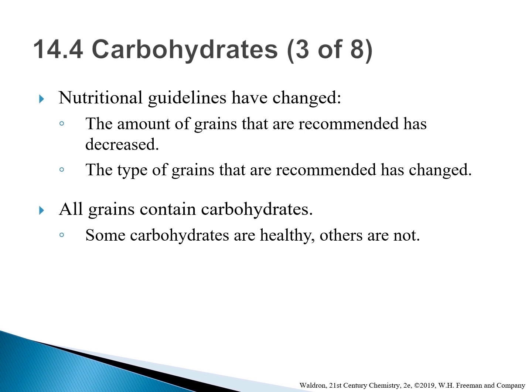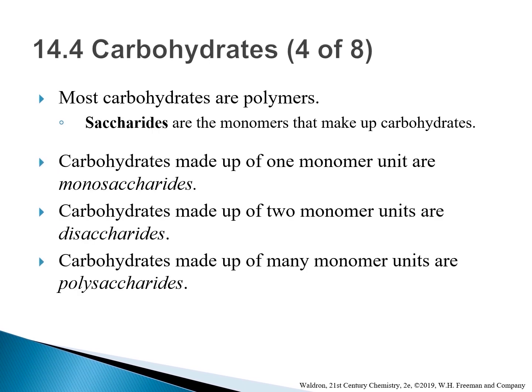As MyPlate demonstrates, a gradual shift is taking place away from recommendations to eat more bread and grain products — as the food pyramid suggested — and toward recommendations to eat less. All grains are composed mainly of carbohydrates. Most carbohydrates, which are macronutrients, are natural polymers. Saccharides are the monomers that make up carbohydrates. Carbohydrates made up of only one monomer unit are monosaccharides, those containing two are disaccharides, and molecules containing more monomers are called polysaccharides.